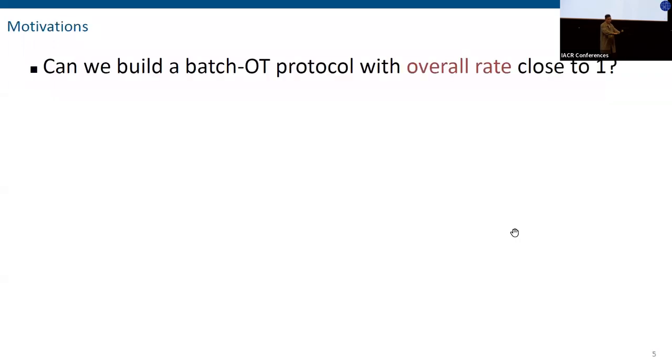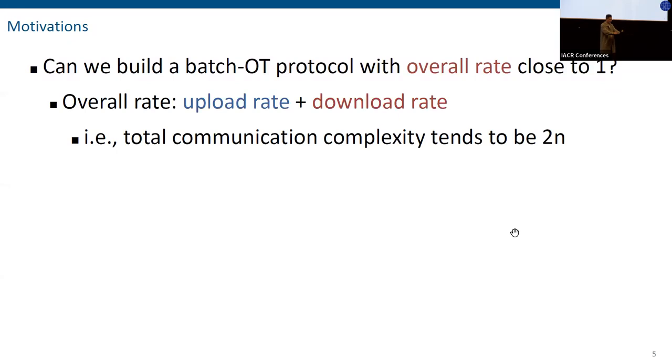In this work, we focus on the two-round batch OT protocol, which means each party in the protocol only sends a single message, where the receiver sends the first message encoding his choice bits, and the sender responds with the second message encoding the chosen bits. The two notions we are interested in are upload rate and download rate. Upload rate is the ratio between the choice bits and the first message. Download rate is the ratio between the chosen bits and the second message.